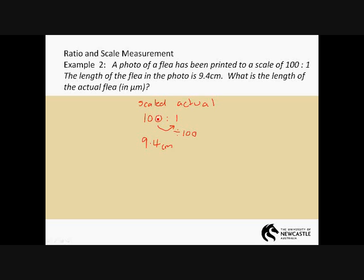So if I divide by a hundred to find out the real length, I'll get these 9.4. And similarly, I'll divide by a hundred. 9.4 divided by a hundred becomes 0.94 and then 0.094. So we've got 0.094 centimeters. We need to get to micrometers. The next one down from centimeters, let's go to millimeters.